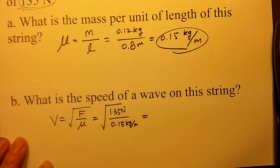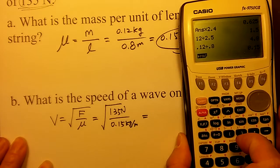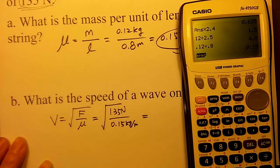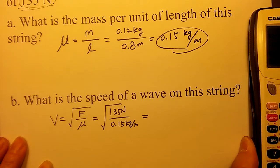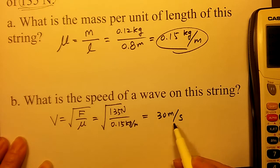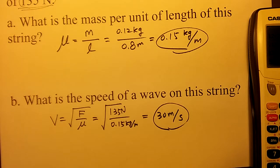So, you can calculate this as 135 divided by 0.15. And then, you can get the square root of this, right? Square root of 900 becomes 30 meter per second as your velocity of the wave on this string. Okay? Thank you and bye now.